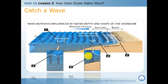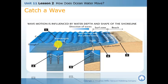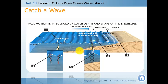The wave motion is influenced by the depth and the shape of the shoreline. The wavelength is the distance from crest to crest. When the wave hits the shore, the motion of the waves changes and that breaks the wave — the wave breaker. The waves break here, which is perfect for surfing.